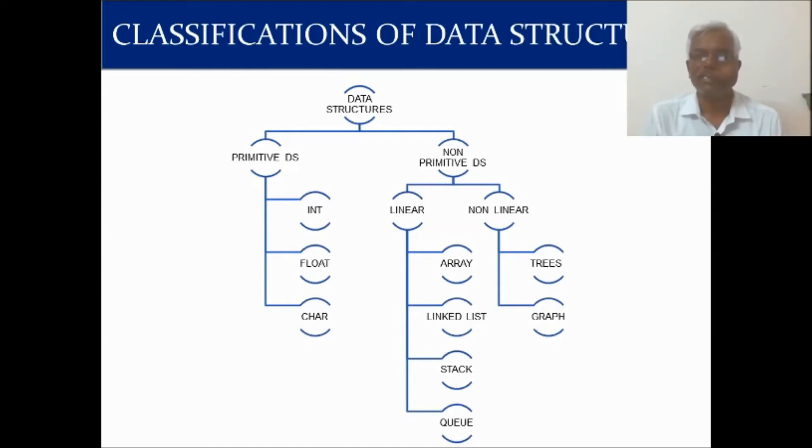Non-primitive data structures, which is other than these primitive data structures, everything is coming under the non-primitive. In non-primitive, it can be further classified into two: linear and non-linear. The examples for linear data structures are array, linked list, stack, and queue. And for non-linear data structure, trees and graphs are very good examples.